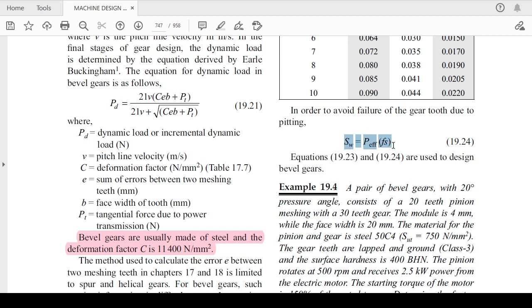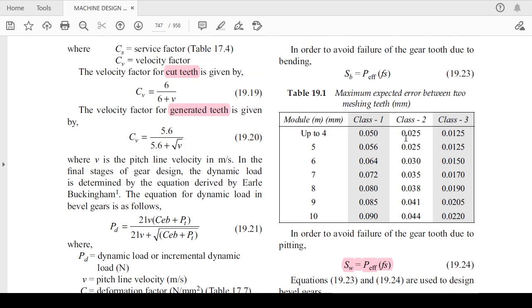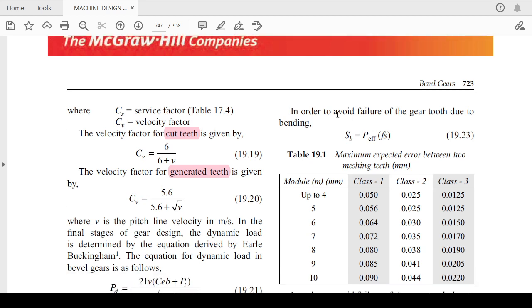To avoid the failure of the gear tooth due to pitting, your wear strength equals P effective multiplied by the factor of safety. In this way, you can calculate the value of factor of safety if it is not given. To avoid the bending failure, your beam strength should always be equals to P effective multiplied by factor of safety.